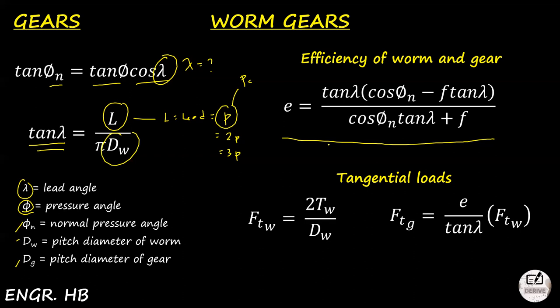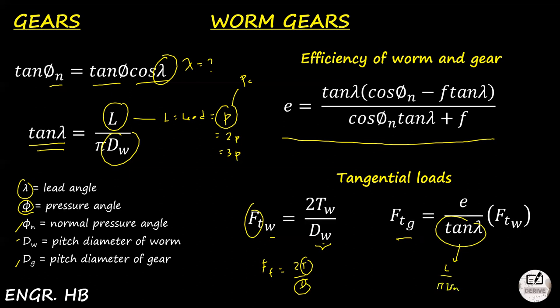Of course, forces are important. We have two tangential loads — one for each body, the worm and the gear. The tangential force on the worm FtW = 2T / DW — same as before, torque over diameter. For the tangential load of the gear: FtG = (efficiency / tan(lead angle)) × FtW, where tan(lead angle) = L / (π × DW).